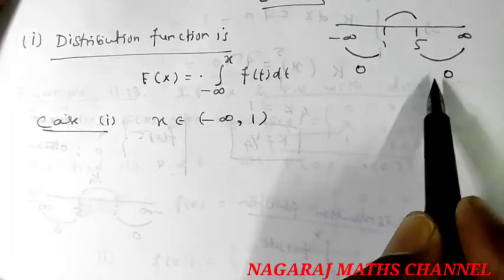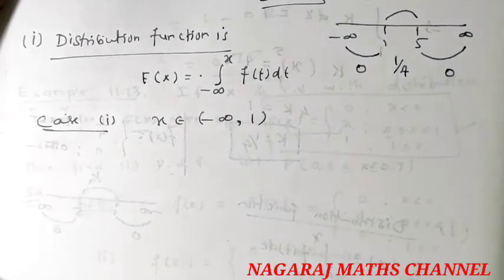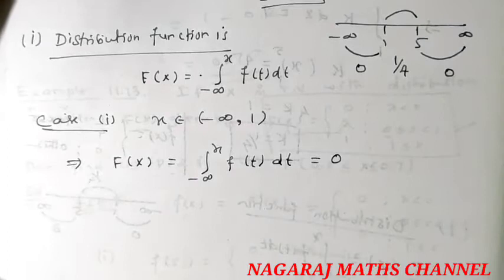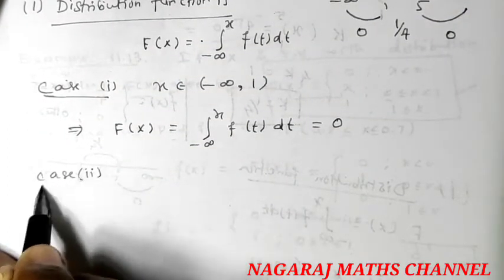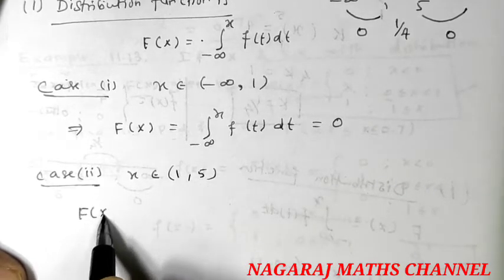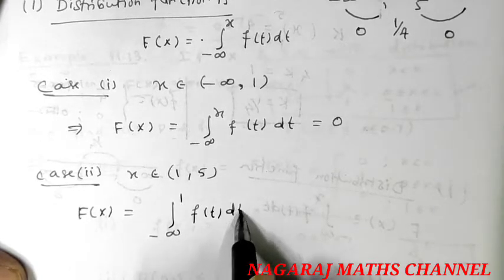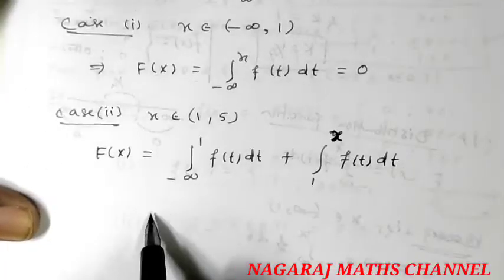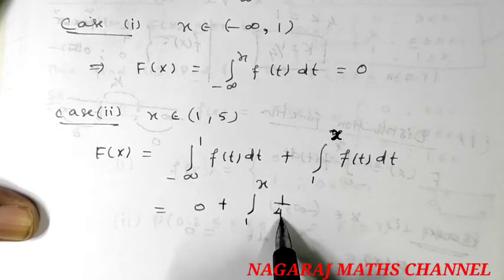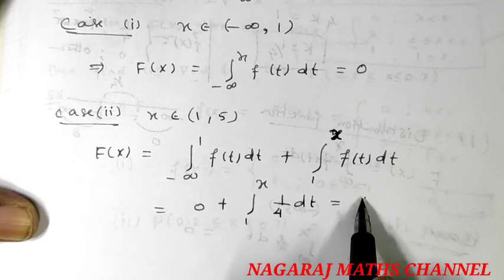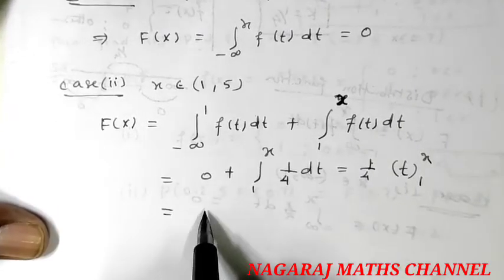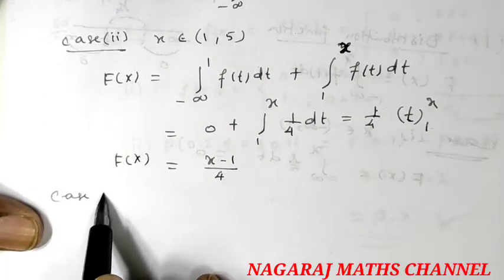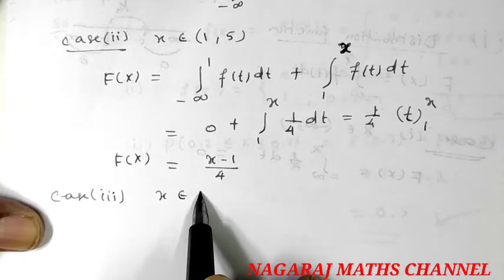For Case 1, x < 1: F(x) = the integral from minus infinity to x of f(t) dt = 0. For Case 2, x belongs to [1, 5]: F(x) = integral from minus infinity to 1 of f(t) dt plus integral from 1 to x of f(t) dt = 0 plus integral from 1 to x of (1/4) dt = (1/4)·t evaluated from 1 to x = (x − 1)/4. For Case 3, x belongs to [5, infinity): F(x) = 1.